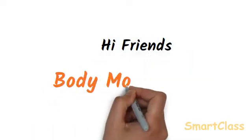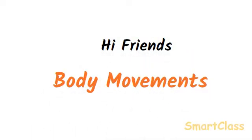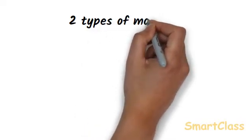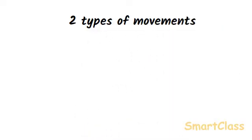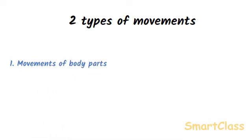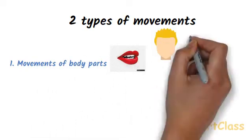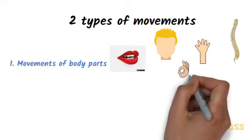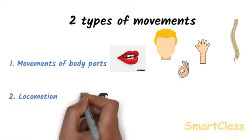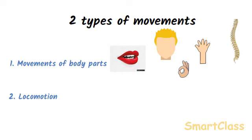Hi friends, today we will study body movements. There are two types of body movements a living organism usually does. First is movements of body parts like mouth, head, arms, backbone, fingers, etc. The second is movement of the whole body from one place to another, which is called locomotion.